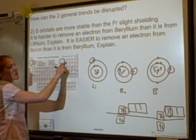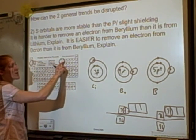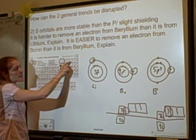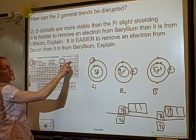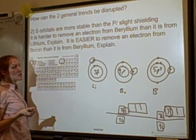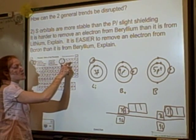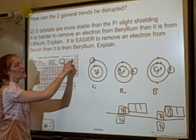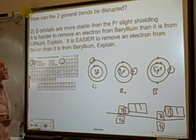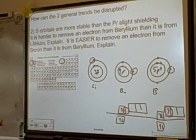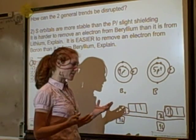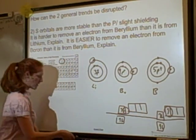Continuing across the period: it gets harder to remove an electron from carbon — another proton. Harder from nitrogen — another proton. Then slightly easier from oxygen due to electron-electron repulsion. Then harder again from fluorine — one more proton, same shielding. And harder still from neon. The general trend is still there, but it gets adjusted by p's being shielded by s's and by electron-electron repulsion.